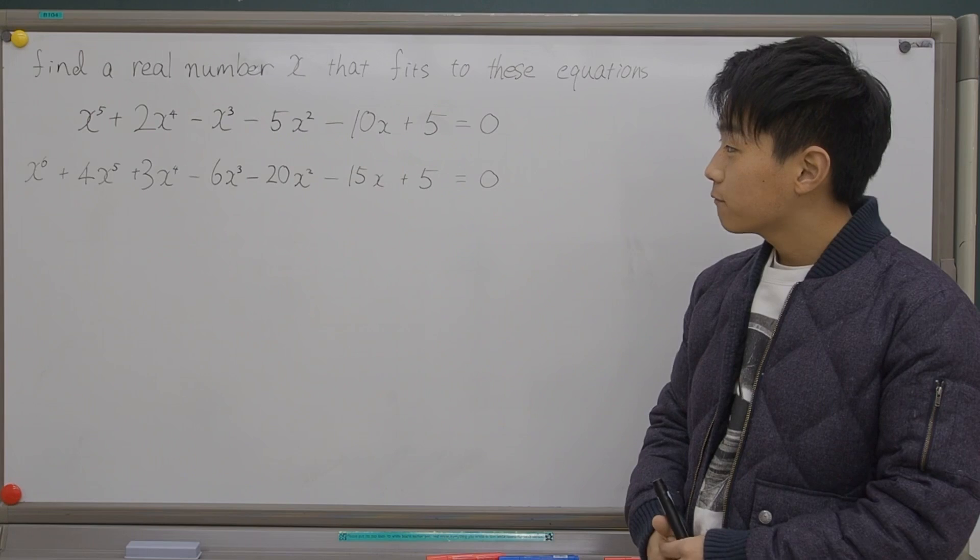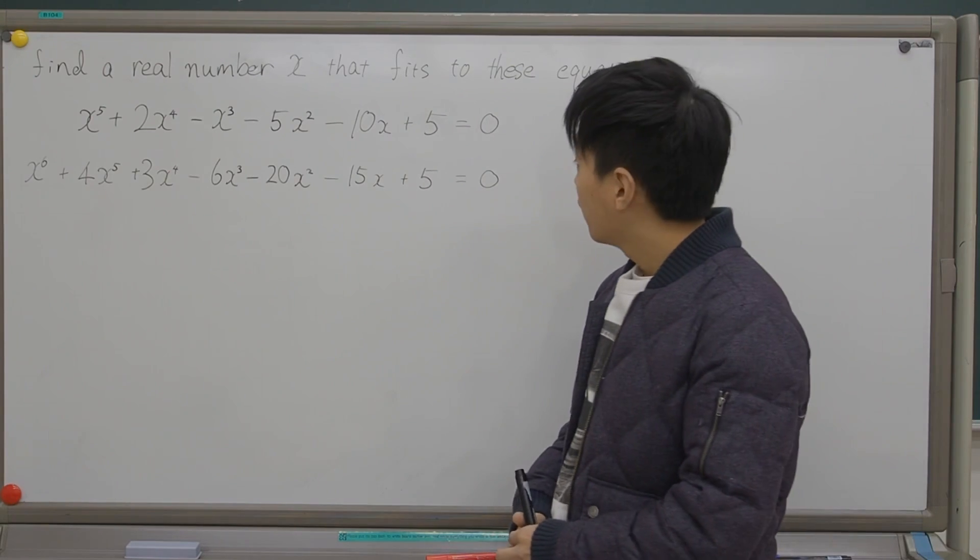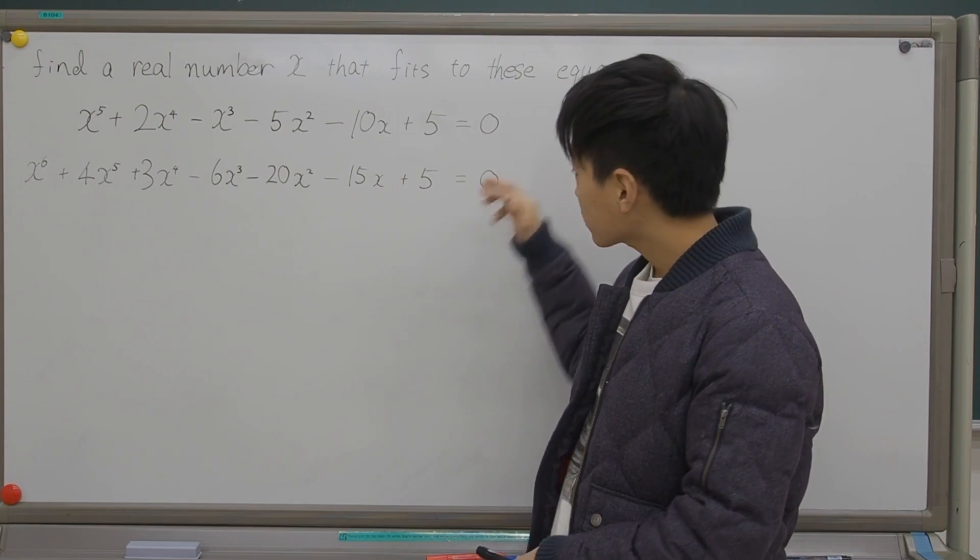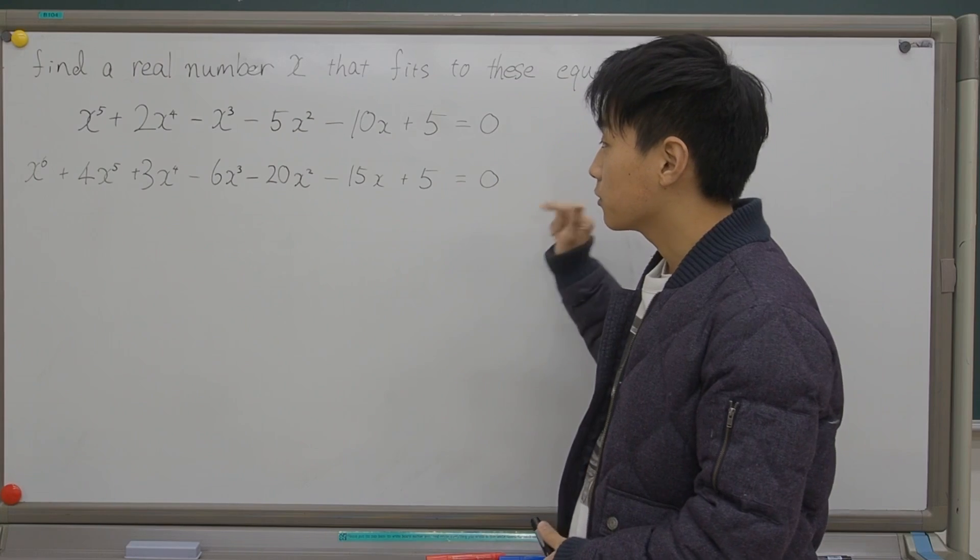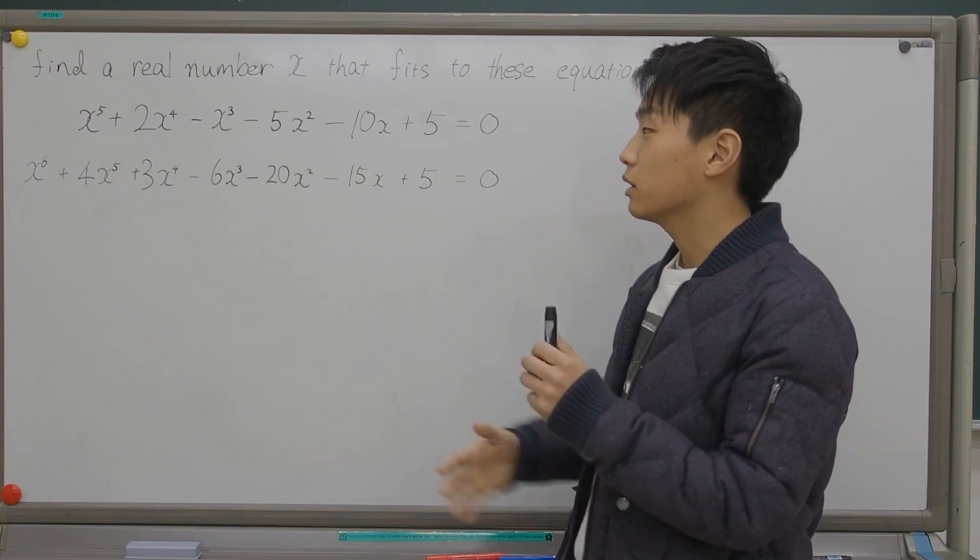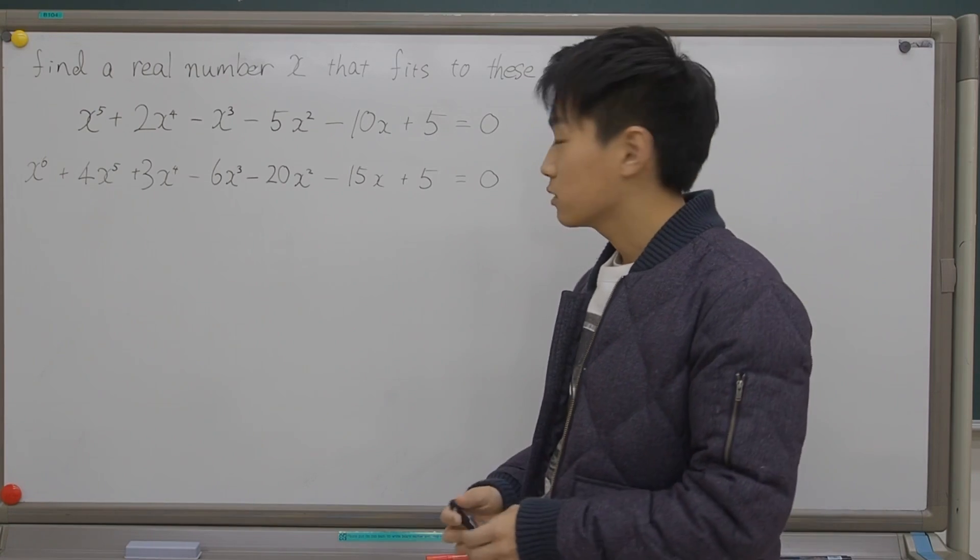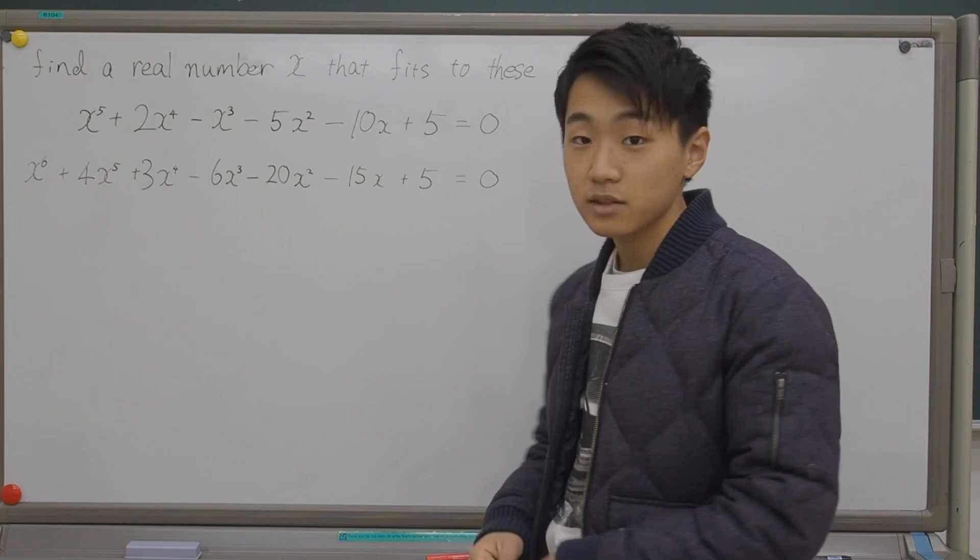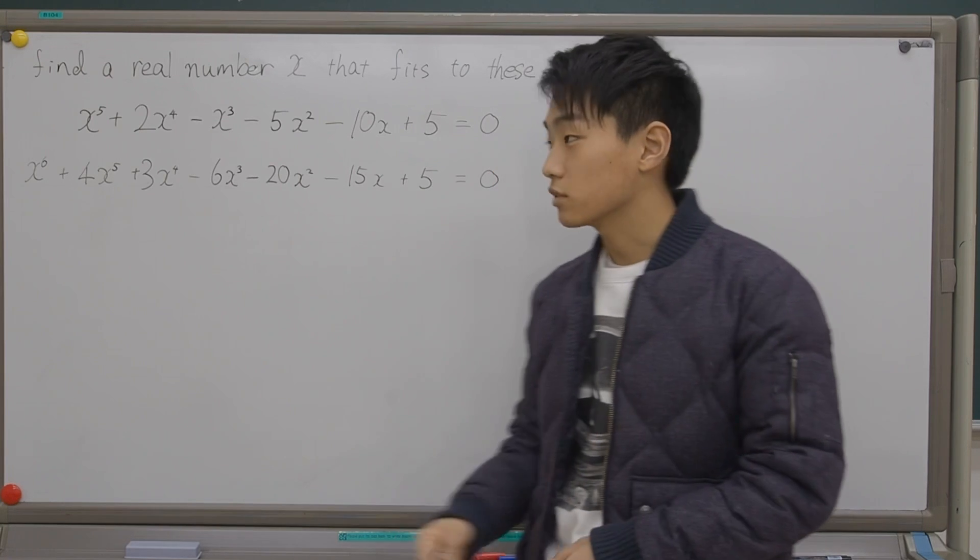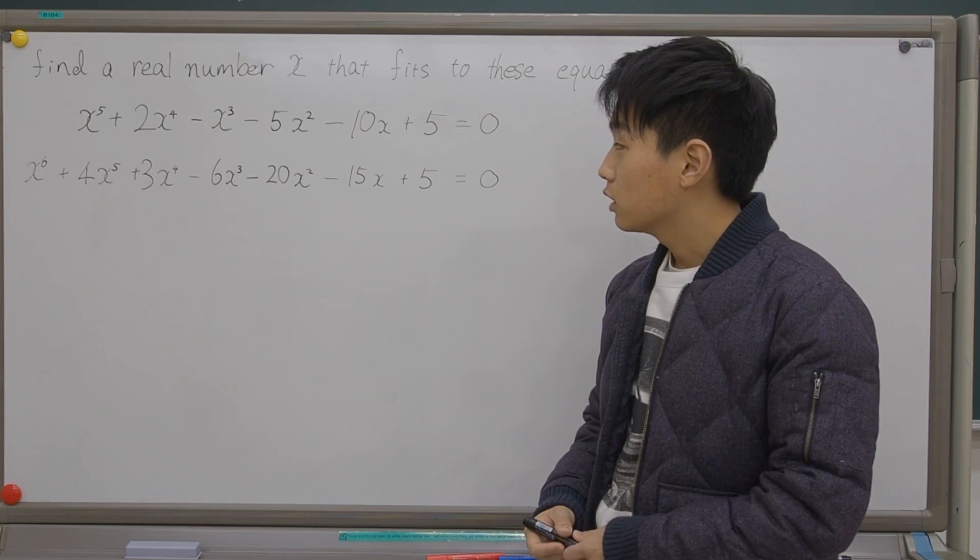What I first tried to do is - both of them equal 0, so maybe subtract them and try to factorize them or those kind of things. But it didn't work, of course. It's not that simple. It's the number 8 question, so it doesn't go that straightforwardly.